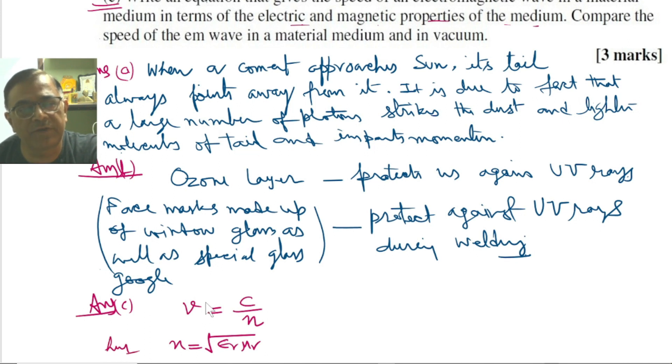Thus, the velocity of electromagnetic waves through the medium in terms of electric and magnetic properties should be given by the expression V equals C by square root of epsilon R mu R. This is the required expression.